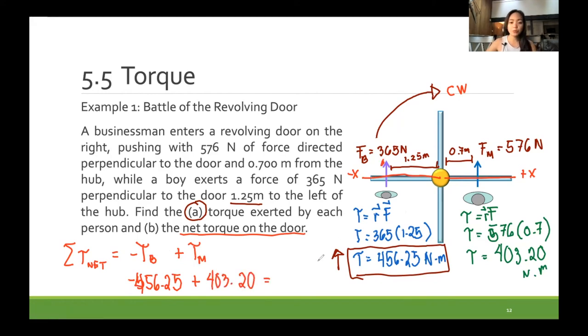So the net torque will be negative 53.05 newton meter. This will be our net torque.